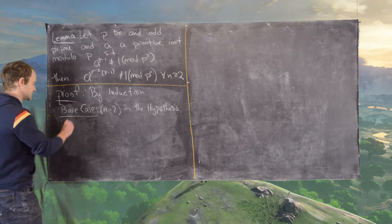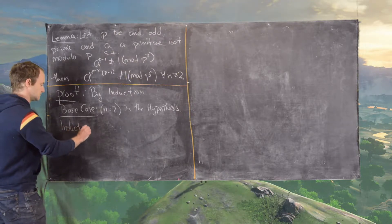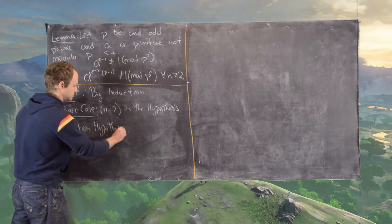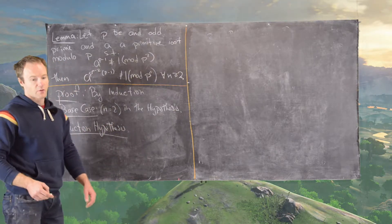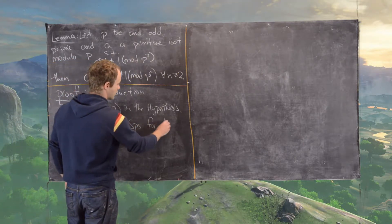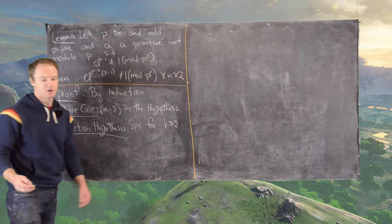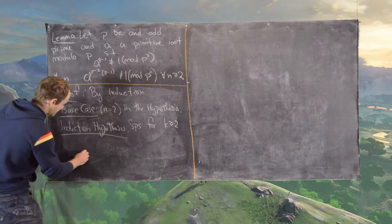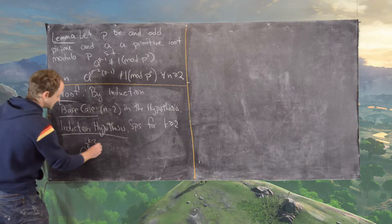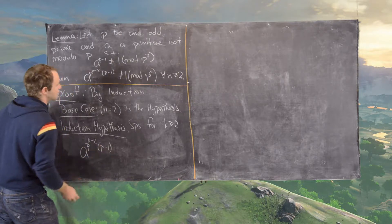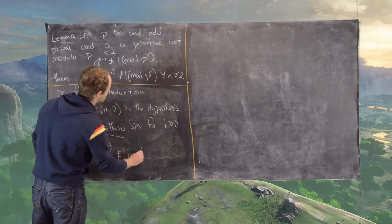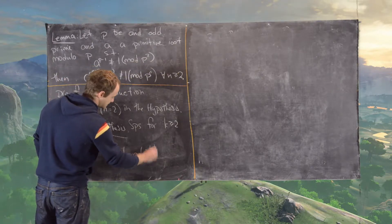Now let's take our induction hypothesis. In other words, we suppose for some k greater than or equal to 2, we know that a to the p to the k minus 2 times p minus 1 is not congruent to 1 modulo p to the k.